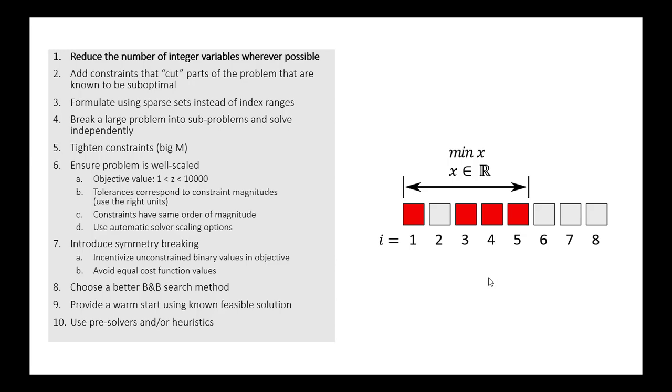It will take an integer value even though the variable itself is a continuous variable. So in this example, this is just one way of reducing complexity. We take what would otherwise be a binary variable, but because of the constraints involved in the problem, we can make it continuous and solve it more quickly.